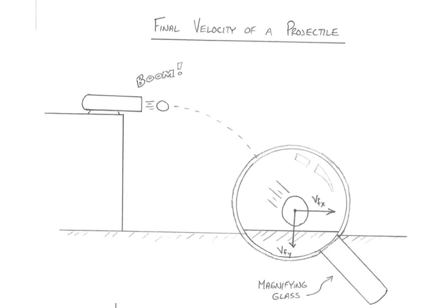When analyzing a projectile, the last thing we need to calculate is the final velocity the instant before it hits the ground. The biggest misconception is that it hits the ground, stops moving, so the final velocity must be zero — that is not correct. The second it hits the ground it is no longer a projectile, so that final velocity doesn't apply. The final velocity of a projectile pertains to the split second before it hits the ground; that's the last possible moment the object was still a projectile.